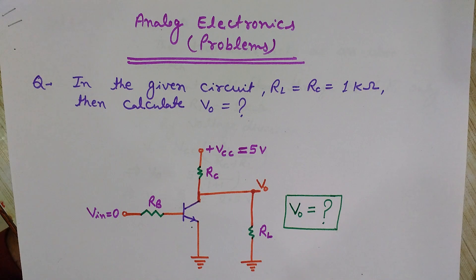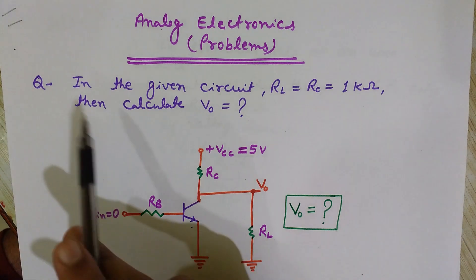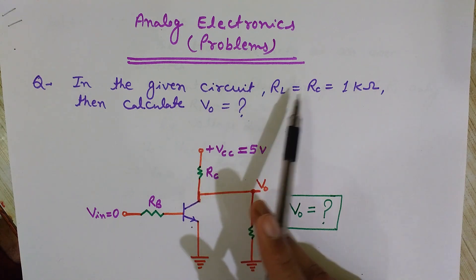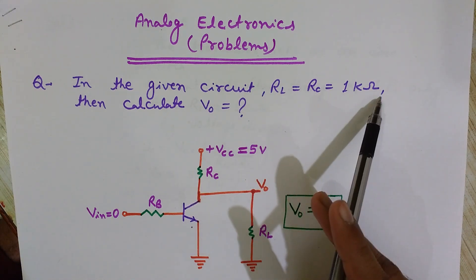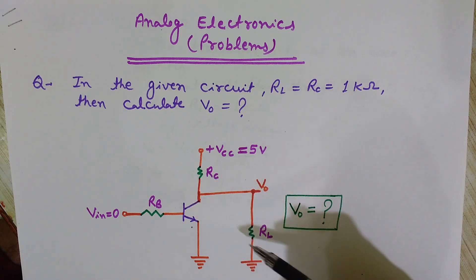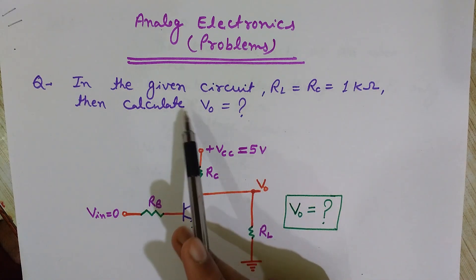So let's see our problem. In this given circuit, RL is equals to RC which is equals to 1 kilo ohm. This is RC, this is RL, and I want to calculate the V0, the output voltage.